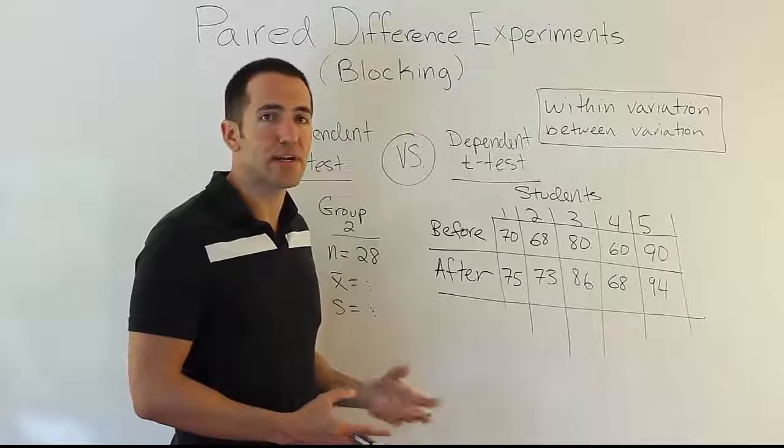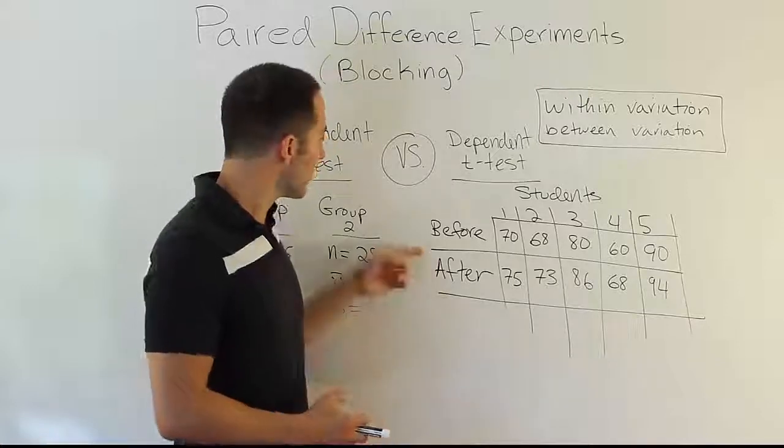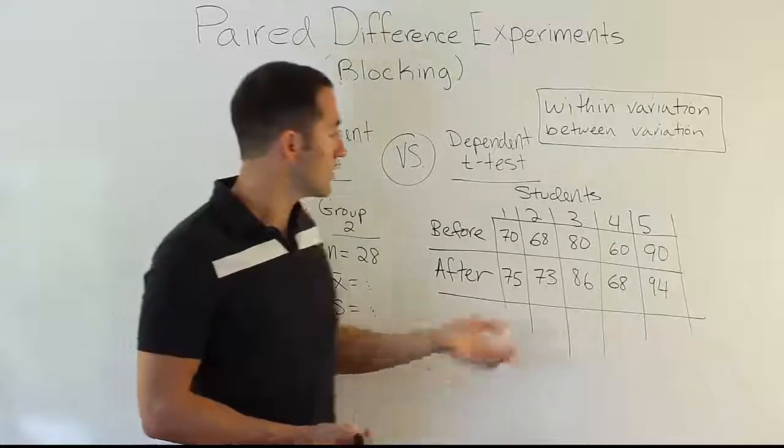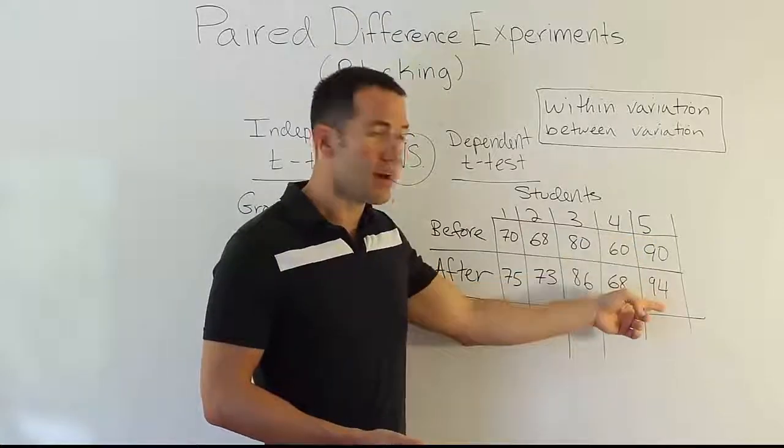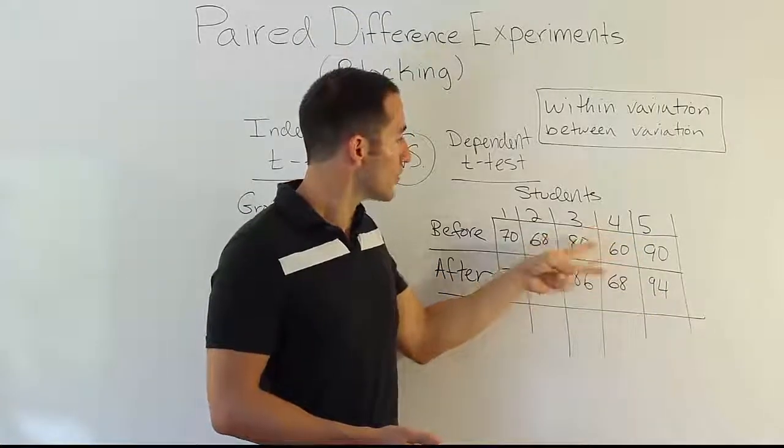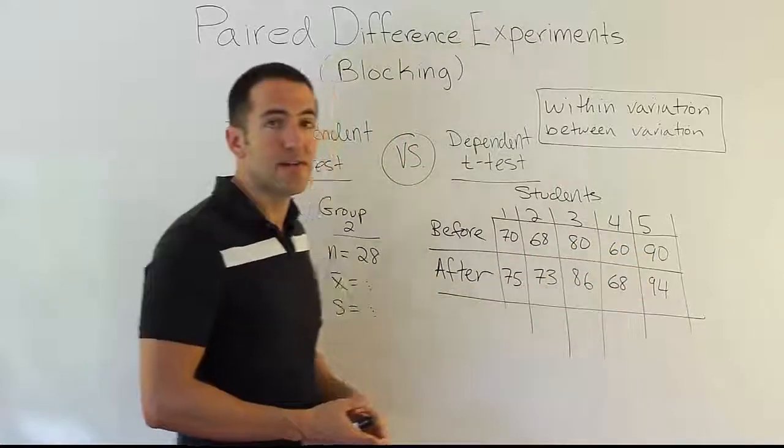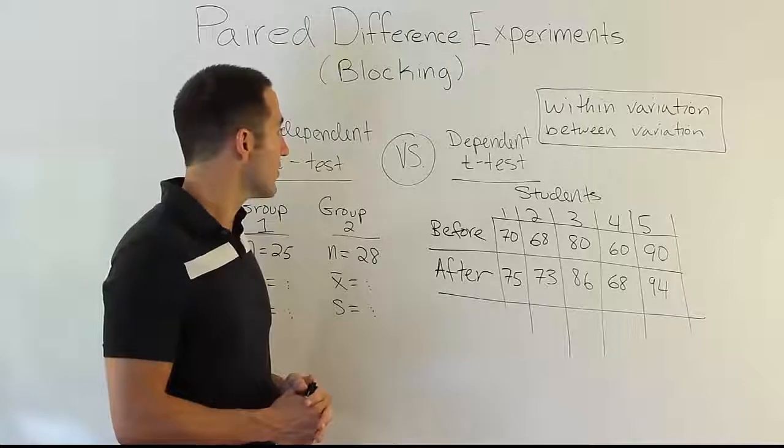Our goal is to figure out whether my test prep program improves test scores. So I don't really care that student four is not as good a student as student five. That doesn't matter to me. I know that those differences exist already. I'm not looking to show that. I want to show that my test prep program will improve test scores for students in general. So student four gets a boost. Student five gets a boost. Even though student four is a pretty poor student compared to student five, it doesn't matter. We see that there's an improvement in either case.